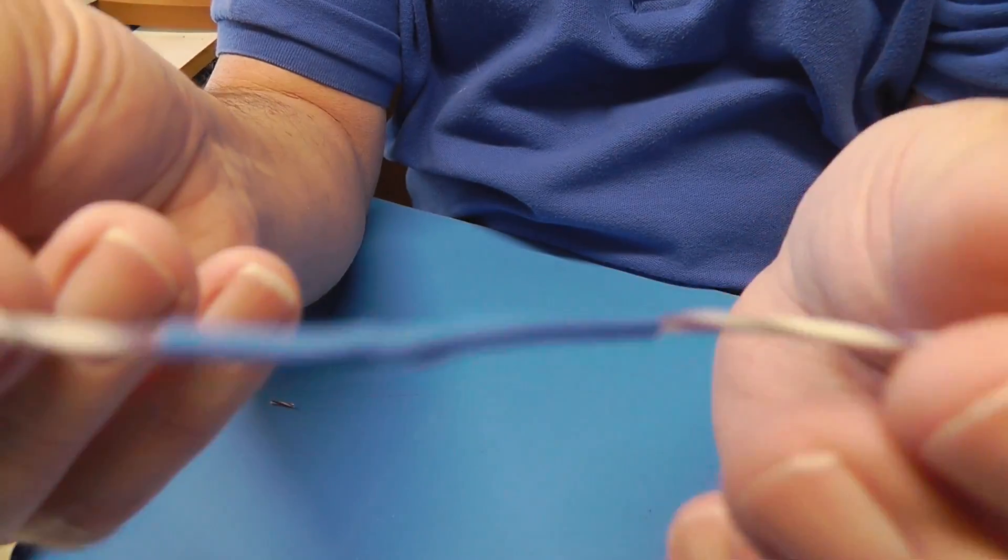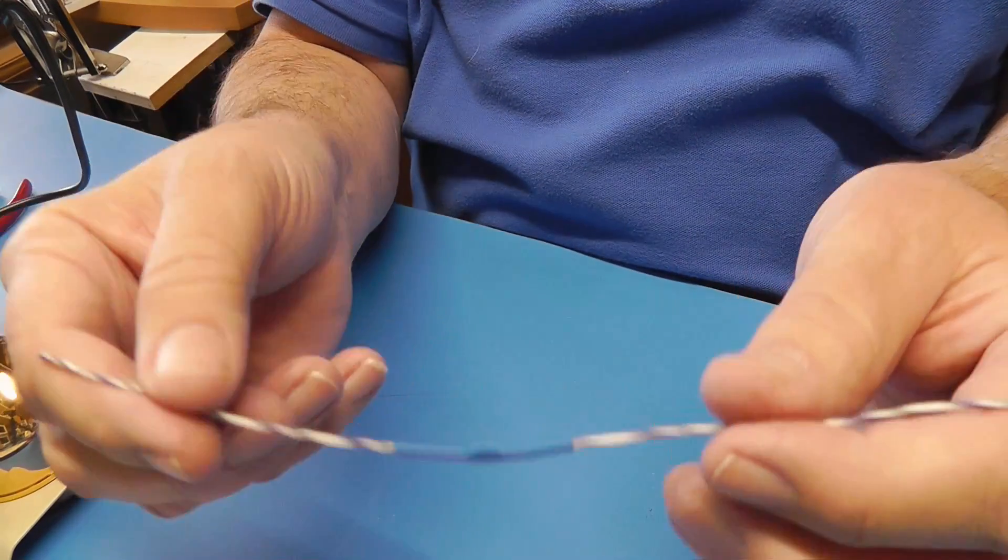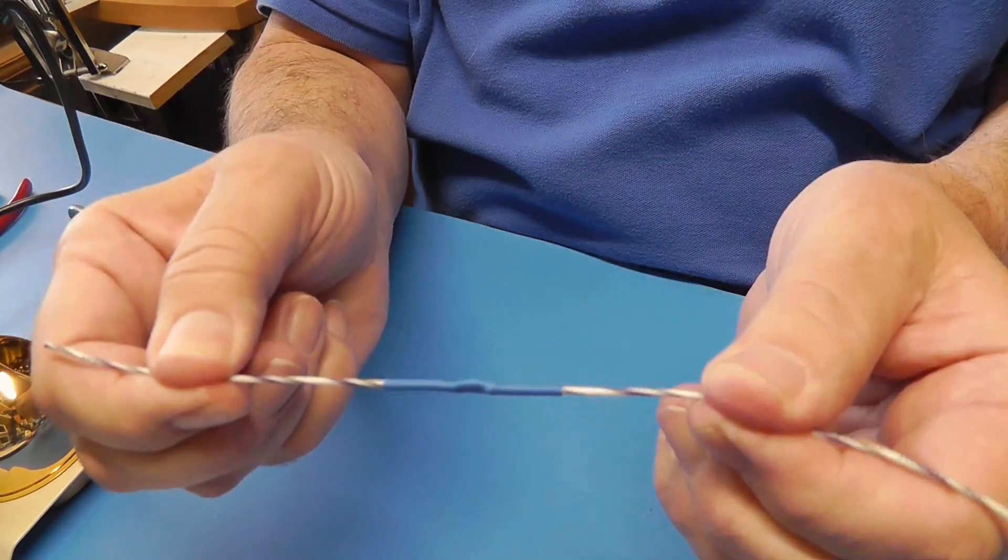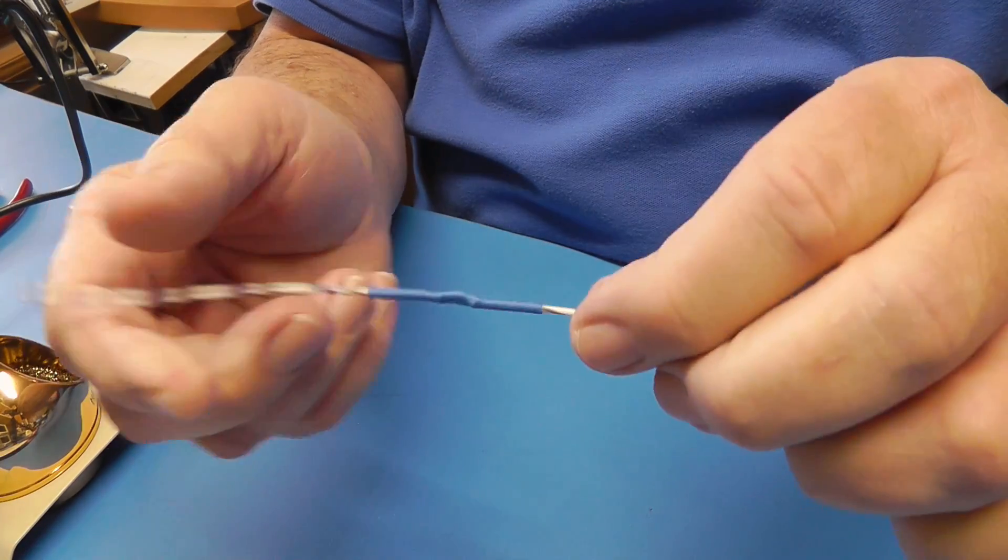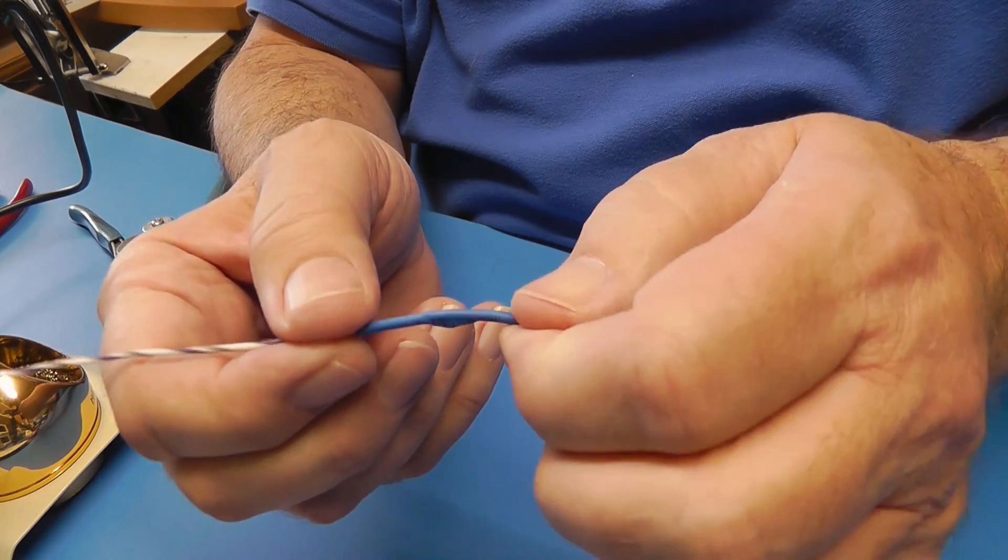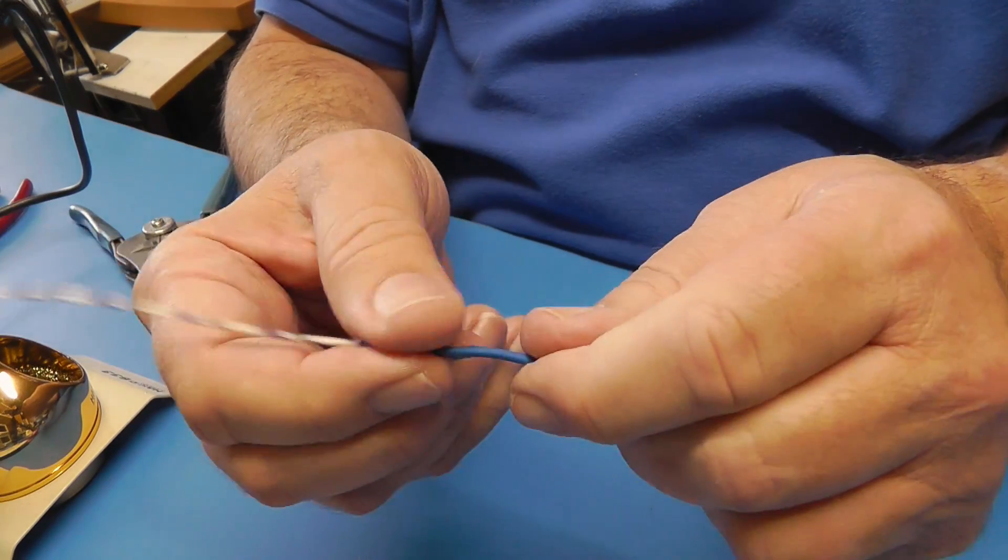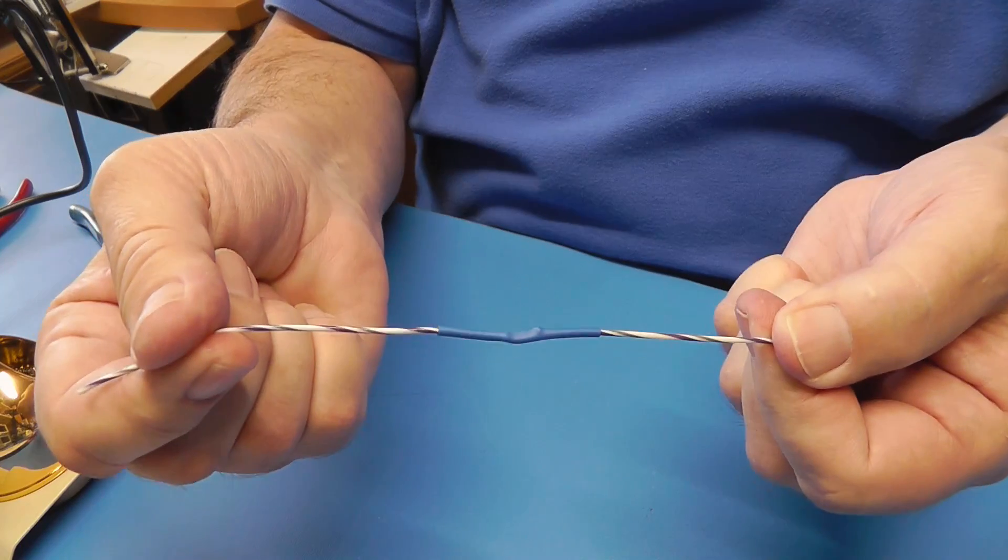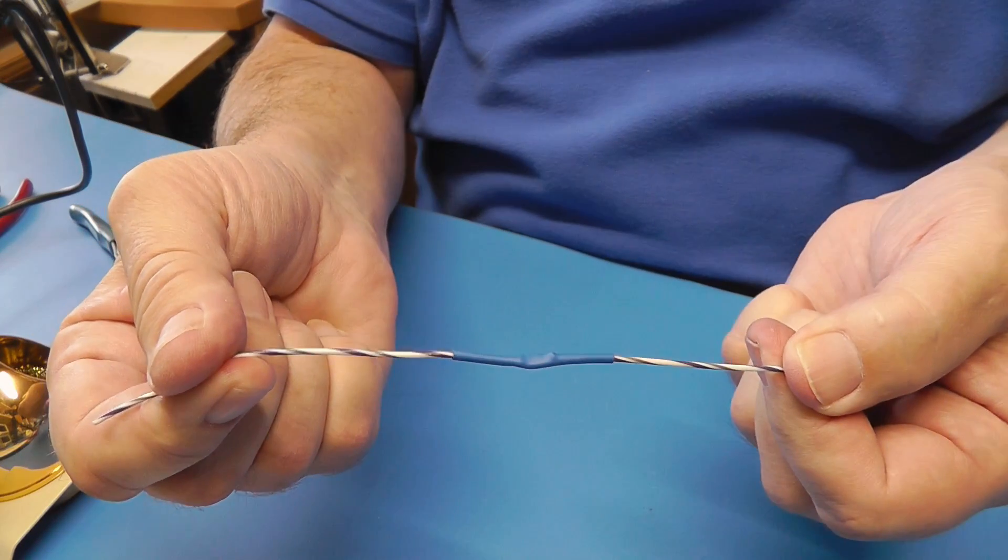So what we have done is soldered those two wires together with a connection that is strong physically and is well insulated. Nothing is sticking through anything like that. And there we have it. We have soldered a wire. That's all there is to it.